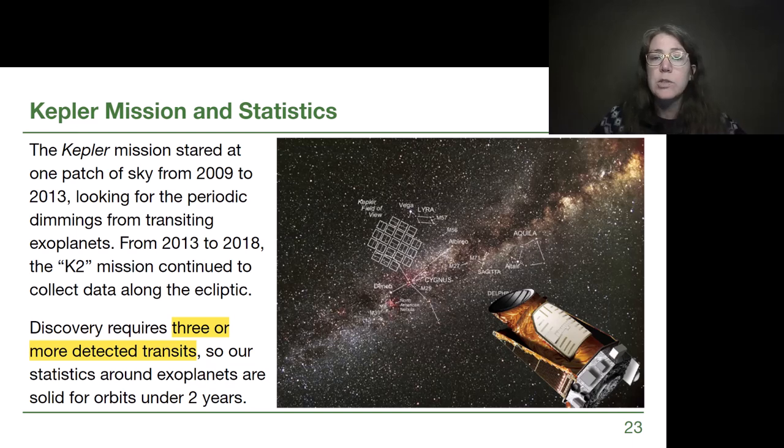So the Kepler mission is one of the most widely contributing missions to our study and statistics of exoplanets. It ran from 2009 to 2013 looking at a single patch of the sky, so its intention was not to find all exoplanets but it was to give us a statistical sample of if we are looking at just this randomly picked patch of sky, what kinds of planets do we find and how common are those planets around the stars in our field of view?